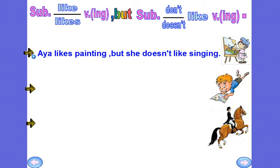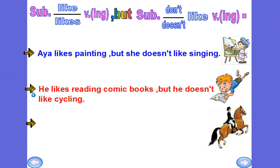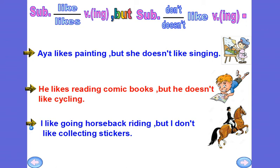For example: Aya likes painting, but she doesn't like singing. He likes reading comic books, but he doesn't like cycling. I like going horseback riding, but I don't like collecting stickers. So 'but' connects two sentences — the first is in affirmative form and the second is in negative form.